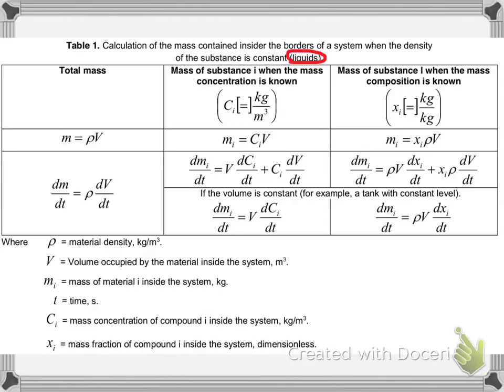If we want to find the total mass inside of our system, first we have to know the borders of our system and if we know them, then we know the volume of it. The mass inside our system will be the density of the solution times the volume inside our borders. Now, since density is a constant, then differential of mass with time will be the density times the derivative of the volume with time.